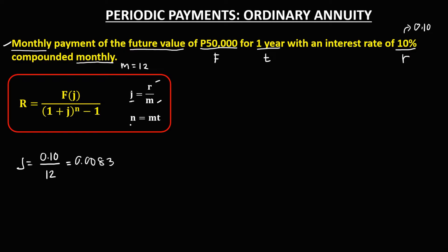Then for the number of payments or the number of periods, that's N. We have M, which is 12, times the time, and time is 1. So the number of payments or the number of periods is 12.